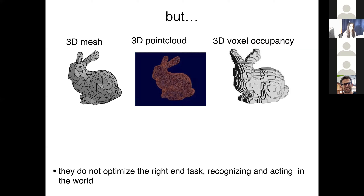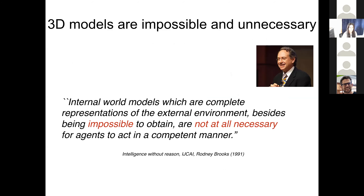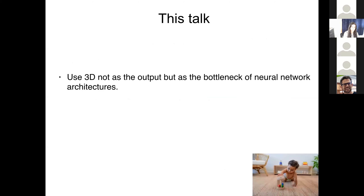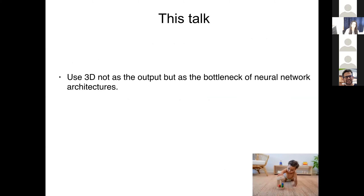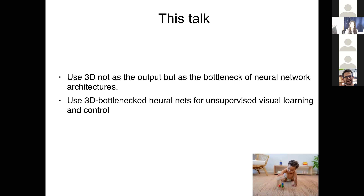On the other hand, we have SLAM representations — Orb-SLAM version 2 takes entangled RGB or RGBD video and separates camera motion (the trajectory) from the point cloud map of the scene. It achieves disentanglement, giving object permanence — objects do not disappear at occlusions. This talk is about using 3D not as the output of a neural representation, but as the bottleneck of a neural network architecture — geometry as a bias for our network architectures, which we call geometry-aware recurrent networks (GRNs). We'll use those 3D-bottlenecked neural nets for unsupervised visual learning and robot control applications.